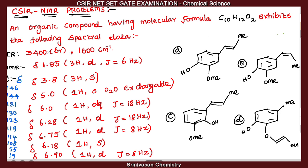The IR frequency shows 3400 cm⁻¹ and 1600 cm⁻¹. Near 3400 cm⁻¹ indicates an alcohol group (O-H stretch), and 1600 cm⁻¹ indicates a C=C double bond — that is an alkene compound. So the functional groups present are alcohol and a carbon-carbon double bond, seen in options A, B, C, and D.